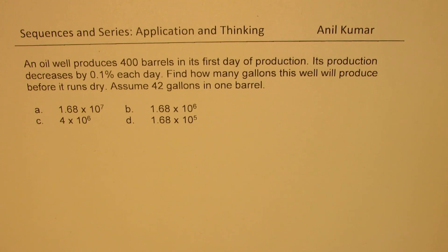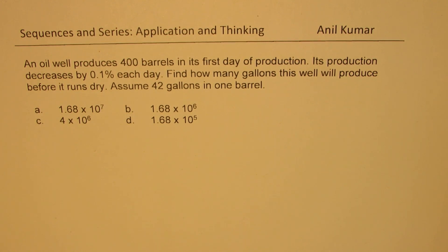The question is: an oil well produces 400 barrels in its first day of production. Its production decreases by 0.1% each day. Find how many gallons this well will produce before it runs dry. Assume 42 gallons in one barrel.